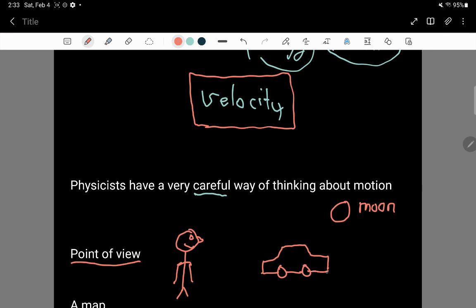And they also see a car driving by really fast, say it's 60 miles per hour. And this person compares the motion of this car and the motion of the moon.